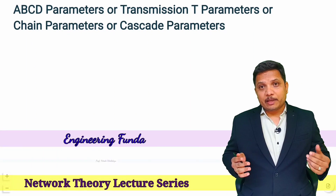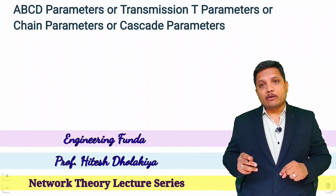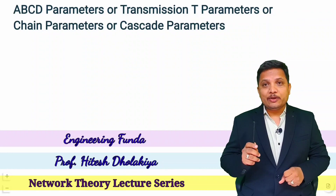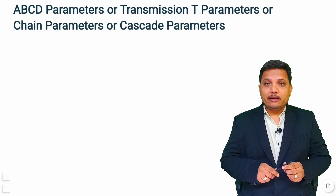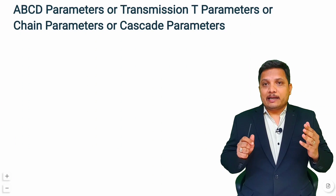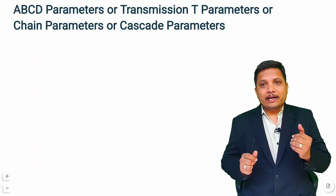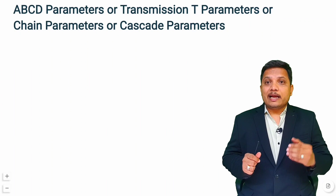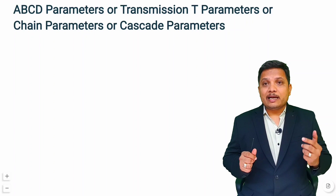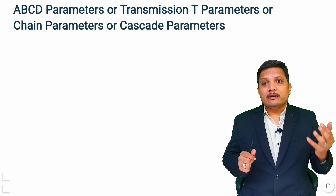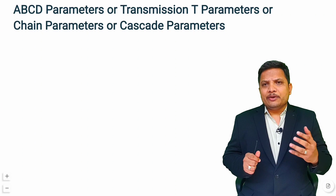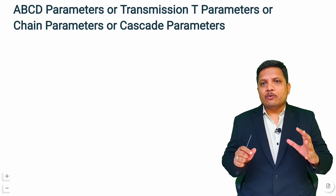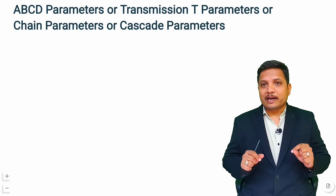Welcome to Engineering Funda family. This video is part of the Network Theory lecture series and in this video I will be explaining ABCD parameters. ABCD parameter is also referred to as transmission parameter, capital T parameter, chain parameter, or cascaded parameter. I will tell you why these names are used when I explain ABCD parameter with respect to a two-port network.